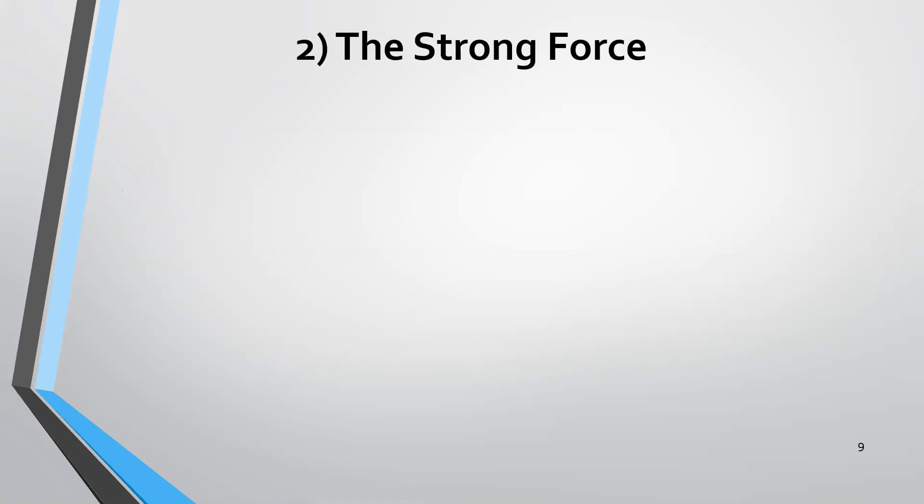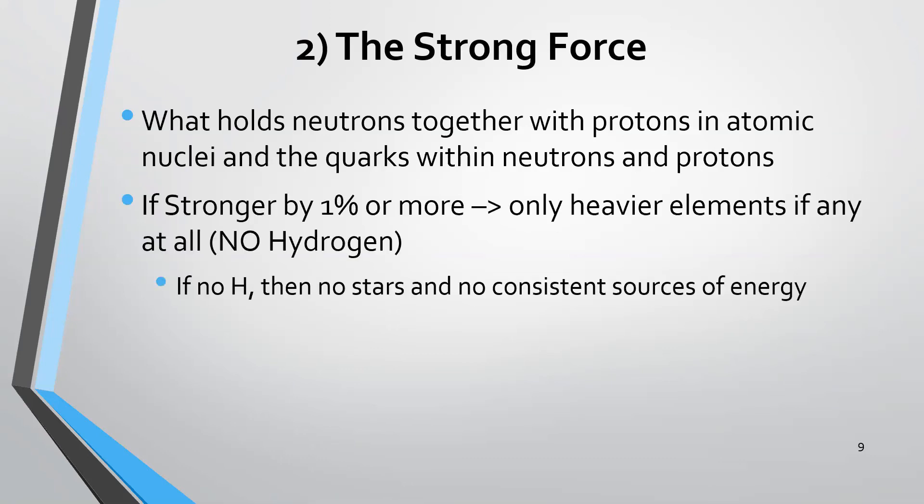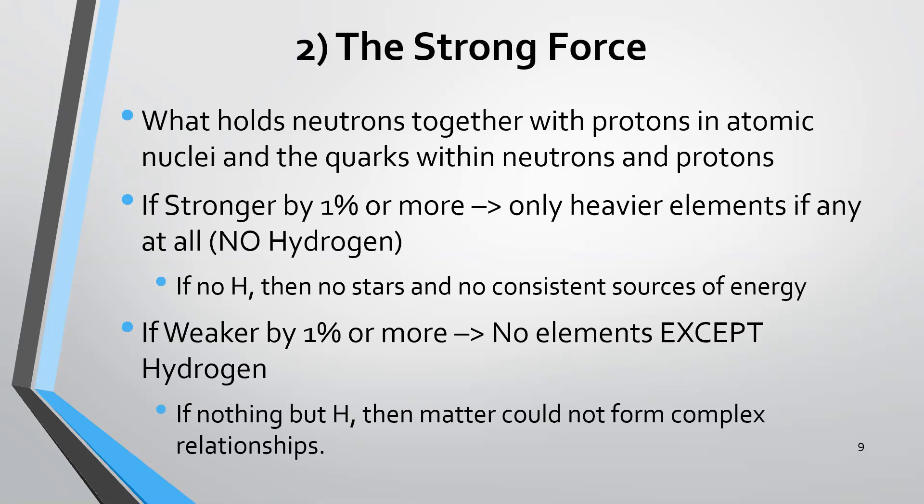The strong force is another thing that had to be finely tuned. This is what holds neutrons together with protons in the nucleus of an atom and quarks within the neutrons and protons. This strong force is obviously essential for atoms to work at all. If it were stronger by 1% or more, you would only have heavier elements if there were any elements at all, and you wouldn't have any hydrogen. The problem there is without hydrogen, you don't have stars, you don't have consistent sources of energy. If it were weaker by 1% or more, you wouldn't have any elements except hydrogen. And if all you had were hydrogen, you couldn't construct anything. You couldn't have anything that's forming a complex relationship. That would be problematic as well.